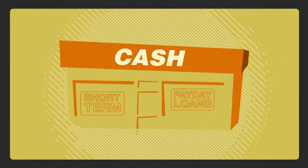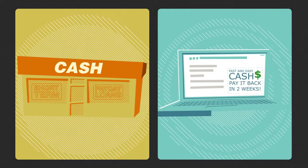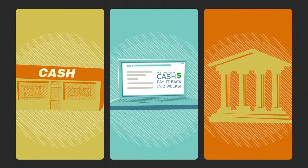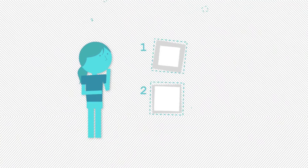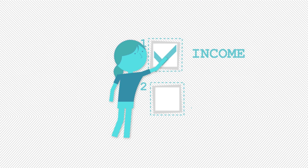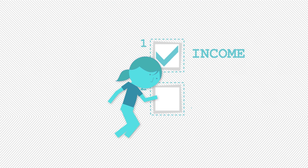You can get them in lots of places. In storefronts, online, even in a few banks. To qualify, Jennifer needs two things. Income, easy, she's got a job, and a checking account.